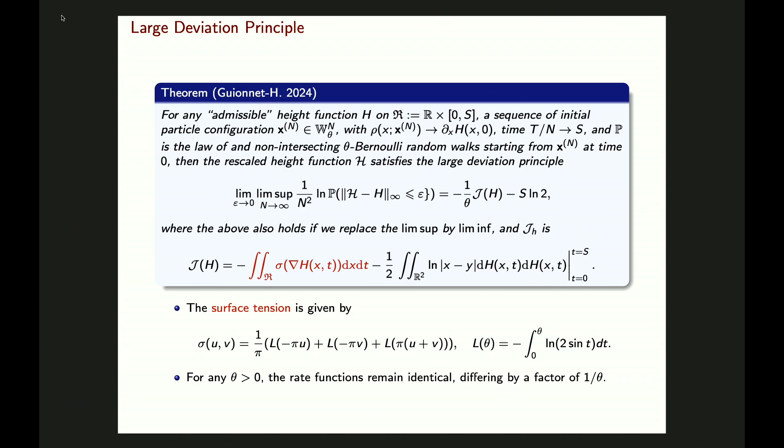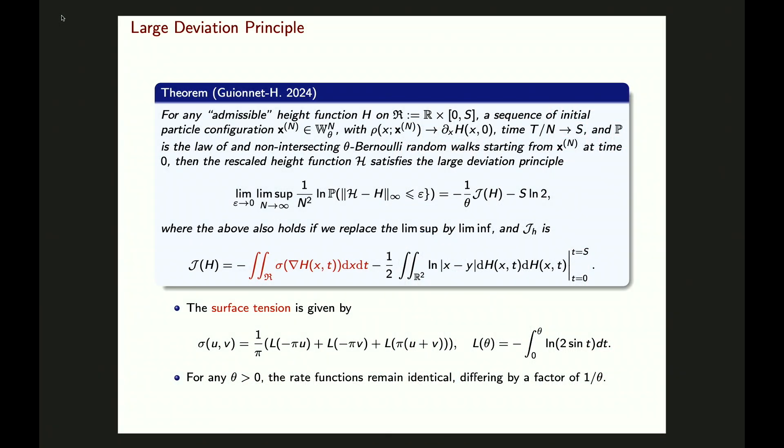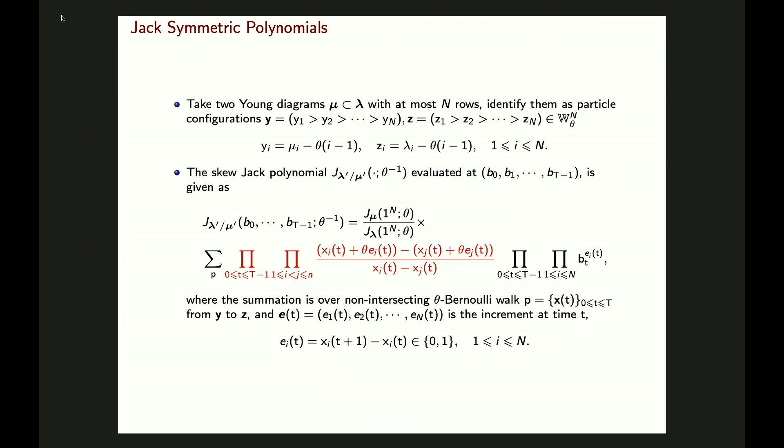The rate function J(h) has two parts. The first part is exactly the same as lozenge tiling, given by the surface tension in terms of the Lobachevsky function. The second part is called the free entropy, but it only depends on the initial and terminal boundary data of h. Interestingly, although the lattices look quite different, the rate function only depends on theta through this 1/θ factor. This is expected if you are familiar with the beta ensemble — the partition function's log divided by n² depends on beta only through a multiplicative factor.